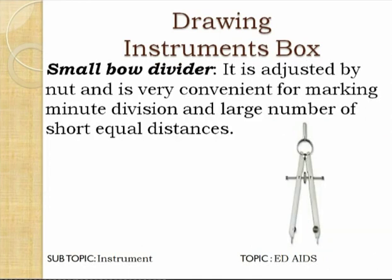The small bow divider is adjusted by a nut and is very convenient for marking minute divisions and a large number of small equal distances. When small distances need to be marked and divided, the small bow divider is used. It is supported with a screw and nut so accuracy can be maintained.